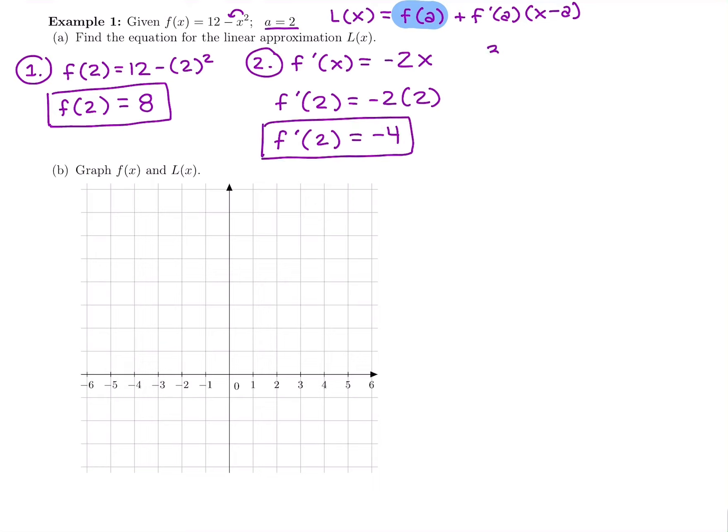My third and final step, now that I did f(a) and f'(a), is to write it into this equation. So my L(x) is going to be f(a) from the first step, which is 8, plus f'(2), so f'(2) is negative, so I'm not going to write plus, minus 4. And then we have (x minus a), our a value here was 2.